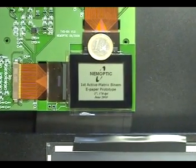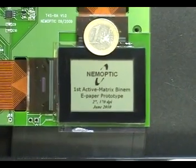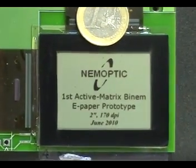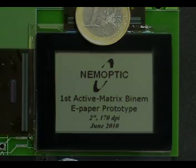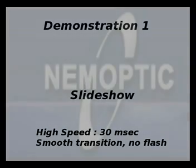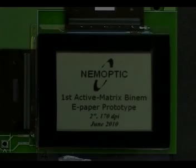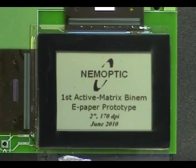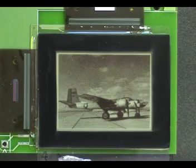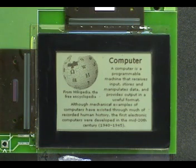This is the first prototype of an active matrix NEM ePaper display. Active addressing enables fast image refreshing. In this prototype, the complete frame is refreshed in 30 ms only.